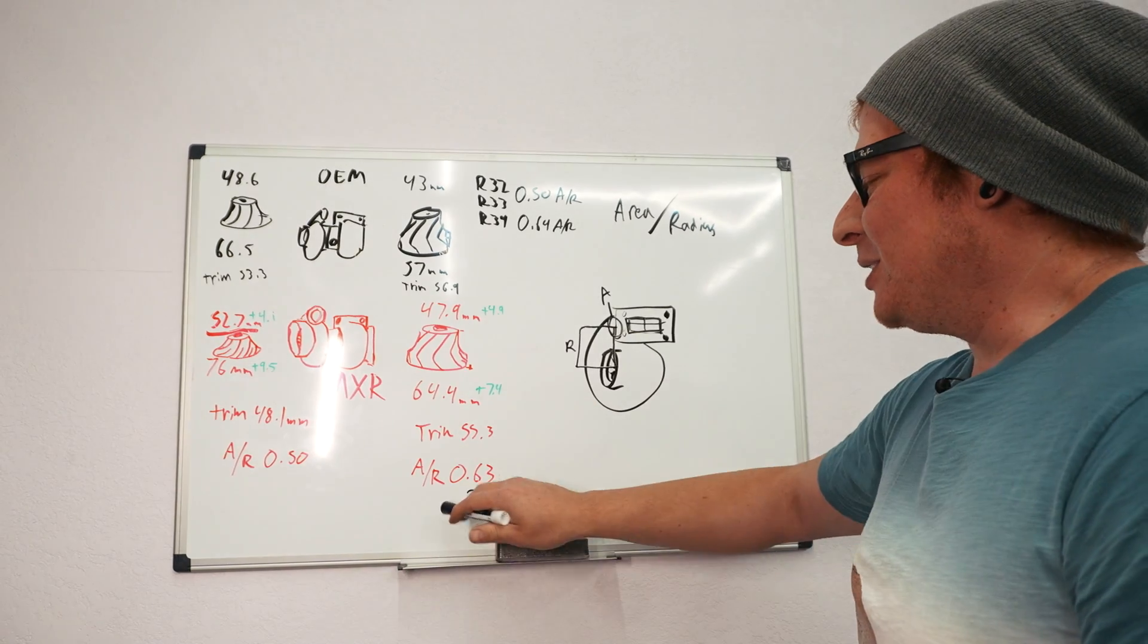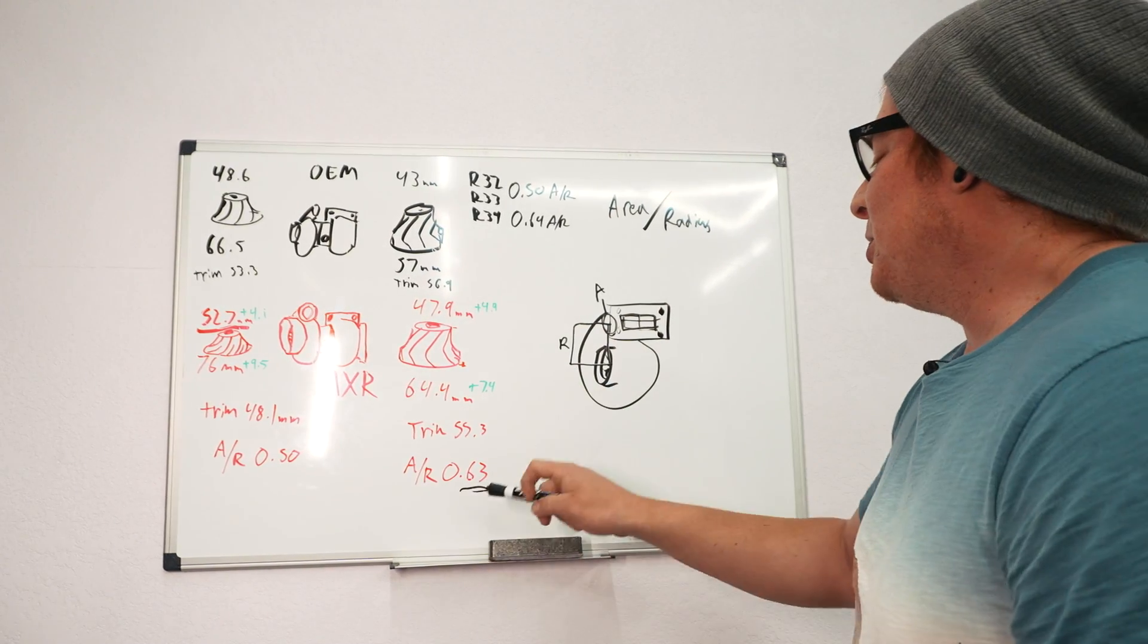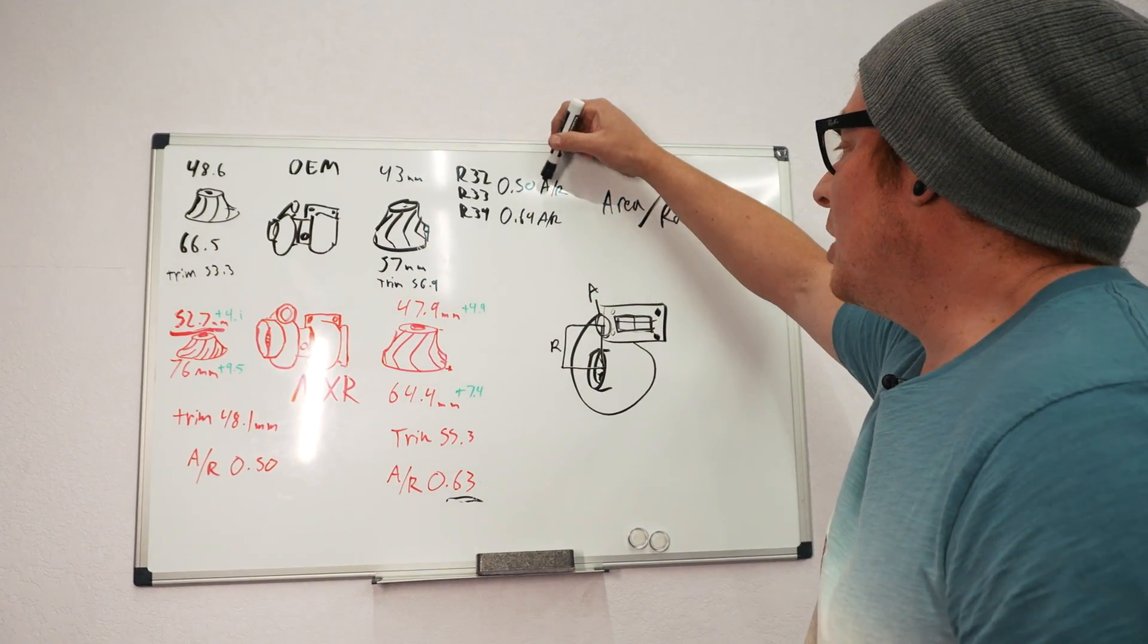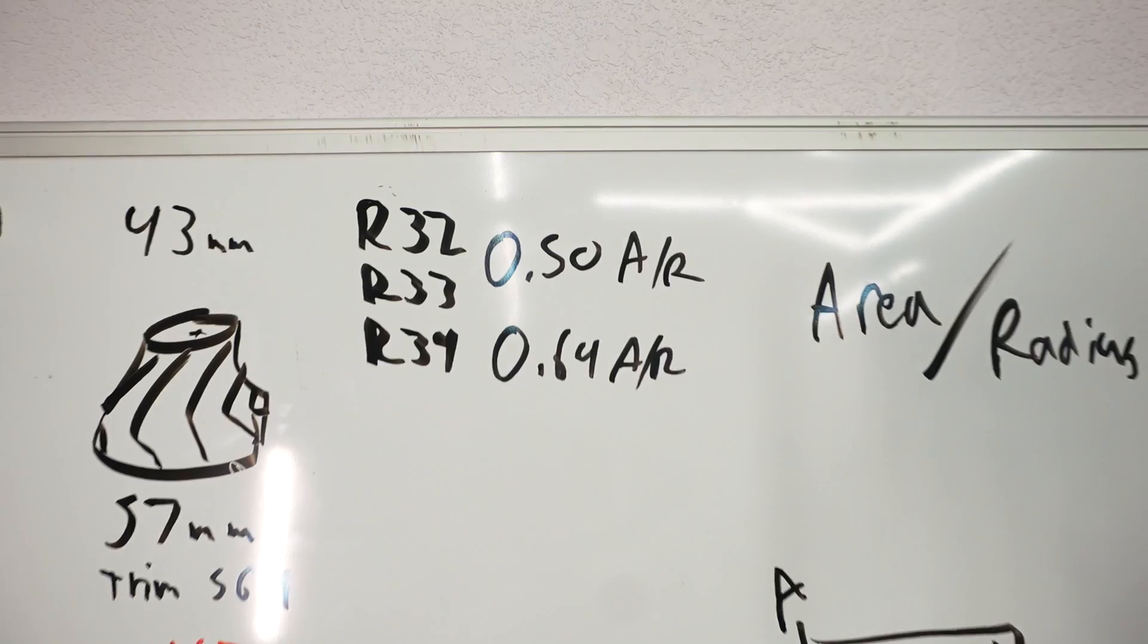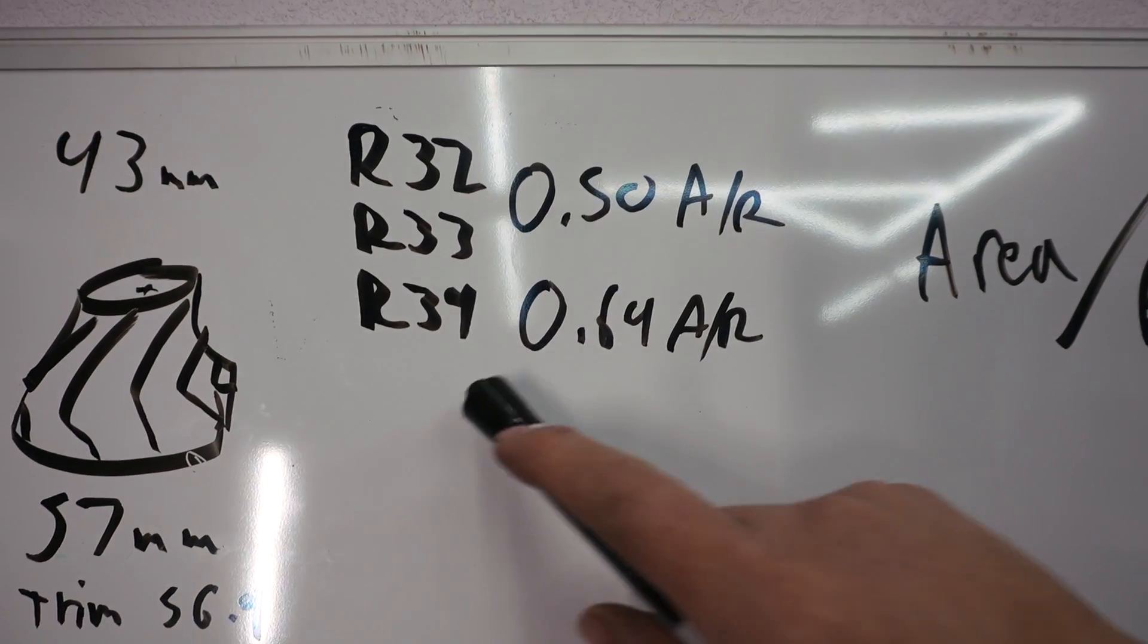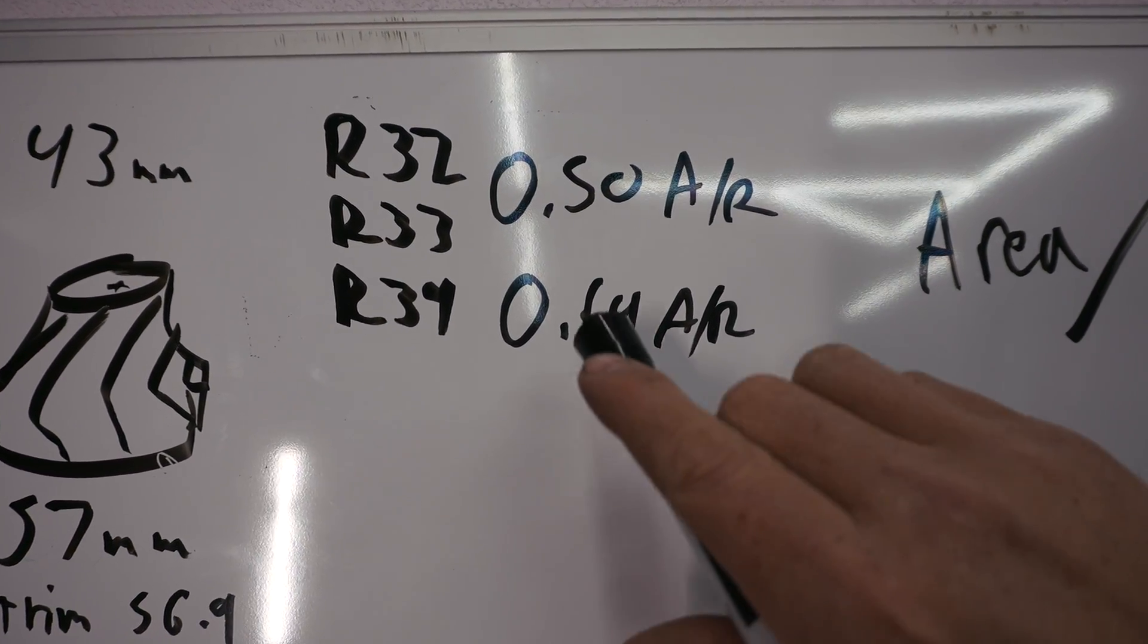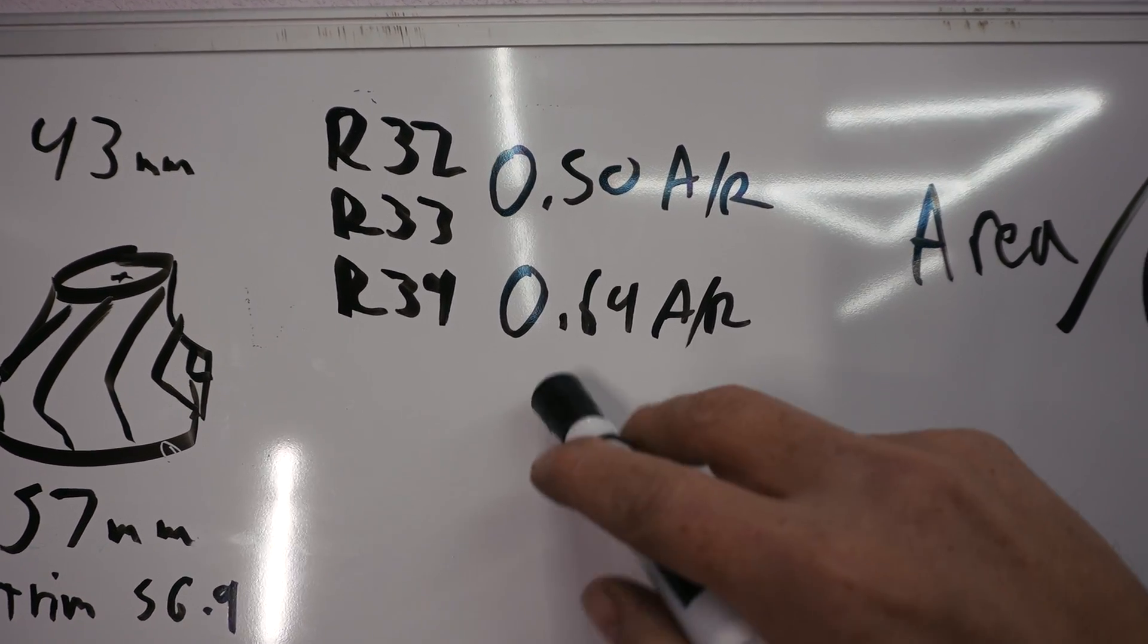That just depends how much power you're making, where you want the power band to be. On a big drag car obviously you want a lot of flow on the top end so you want a big AR rear housing. This is a street car though, so we have a 0.63 and the stock one also was right about there, 0.64 for the stock rear housing. That's on the R34 though - the R33 and 32 have a 0.5 rear housing, so that'd be a good upgrade if you had a 32 or 33.